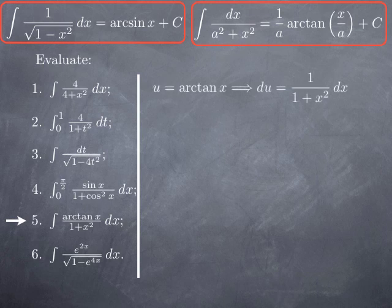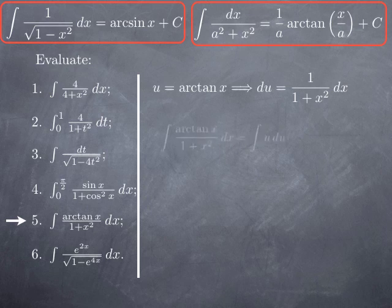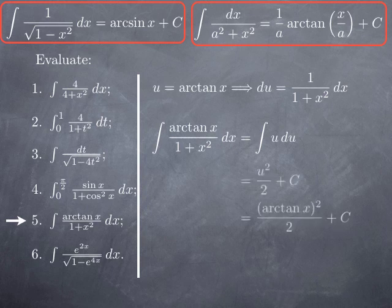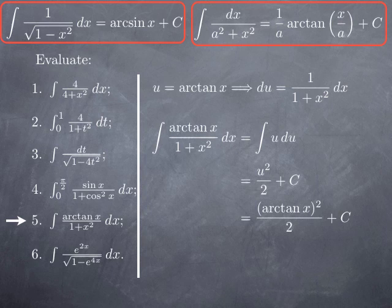For the fifth integral — arctan x divided by 1 plus x squared — we observe that dx over 1 plus x squared is the differential of arctan x, since the derivative of arctan is 1 over 1 plus x squared. So we use the substitution u = arctan x, giving du = dx over (1 plus x squared), and our integral becomes the integral of u du. The antiderivative of u is u squared over 2, so we obtain arctan squared x over 2, plus a constant.